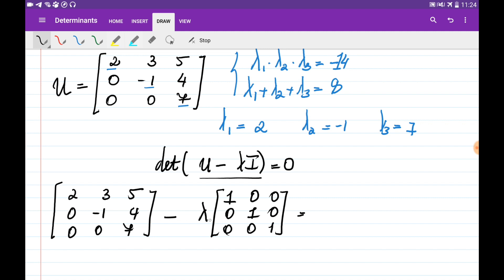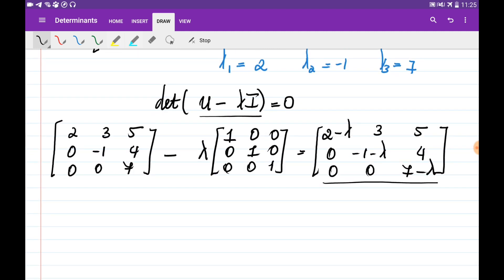If we multiply λ to all its entries and subtract this from U, we get [2-λ, 3, 5; 0, -1-λ, 4; 0, 0, 7-λ]. And the determinant of this matrix should be equal to 0.